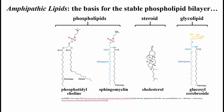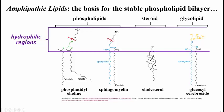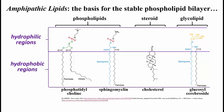The basic structure of membranes is that of a phospholipid bilayer, incorporating a number of other lipid molecules as well. The characteristics of membrane lipids is that they are amphipathic — that's the basis for a stable phospholipid bilayer. Amphipathic means these are molecules that have a hydrophilic region at one end and a hydrophobic region.